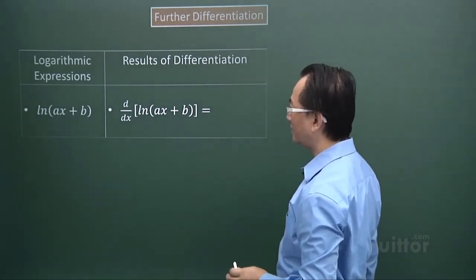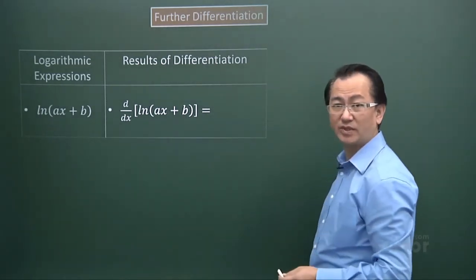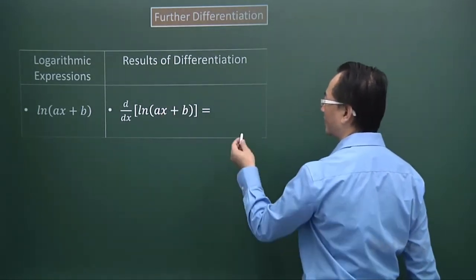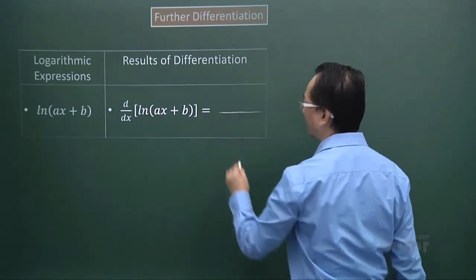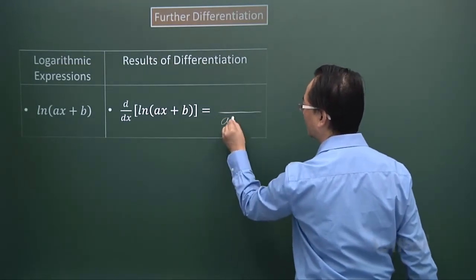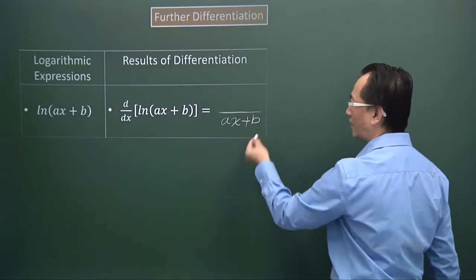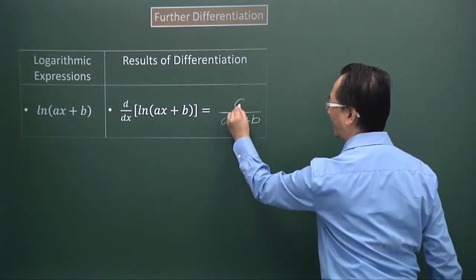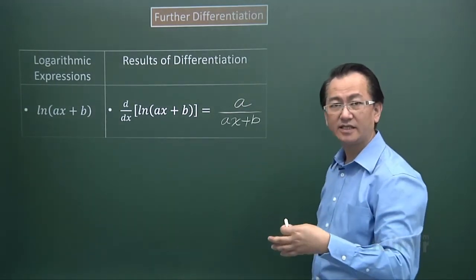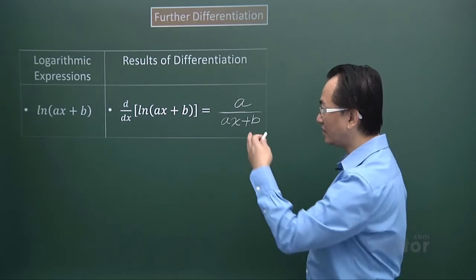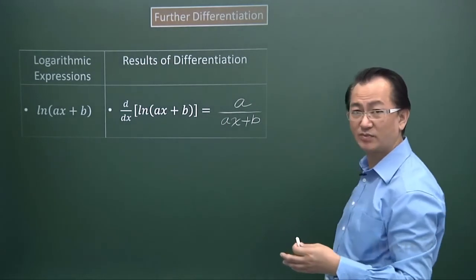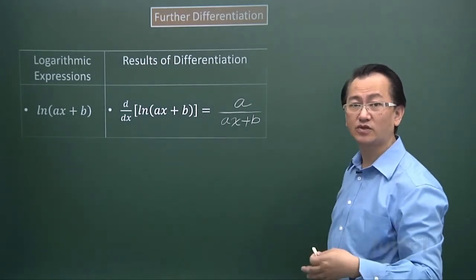Next we have the logarithmic expression: ln(Ax plus B). If I have to differentiate this, I have to consider a fractional expression. I take this expression to be the denominator, and when I differentiate that I get A. So it's a fractional result: A over (Ax plus B). But if I'm thinking of combining the exponential function with this — e to the power of ln(Ax plus B) — then the approach will be different, and we'll see that later.